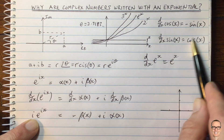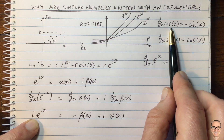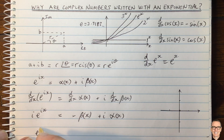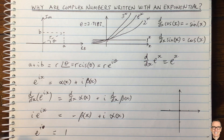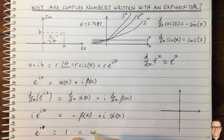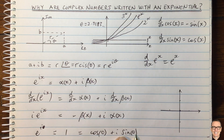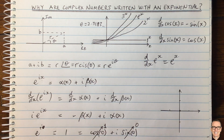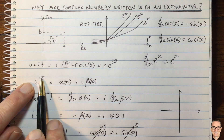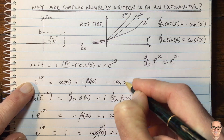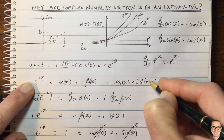To complete the proof, we just need to check that the initial conditions hold. E to the i·0 equals 1, since anything to the power of 0 is 1. And cosine of 0 equals 1 while sine of 0 equals 0, so the initial conditions hold. Therefore, e to the ix equals cosine of x plus i sine of x.